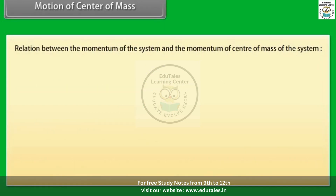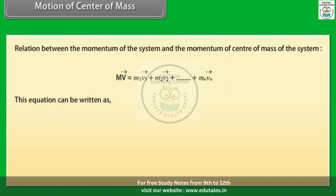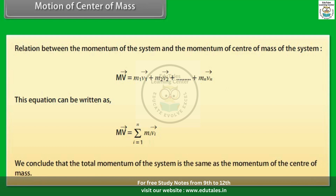The relation between the momentum of the system and the momentum of the center of mass is: MV⃗ = M₁V⃗₁ + M₂V⃗₂ + ... + MₙV⃗ₙ, which can be written as MV⃗ = Σ(mᵢvᵢ⃗). We conclude that the total momentum of the system is the same as the momentum of the center of mass.